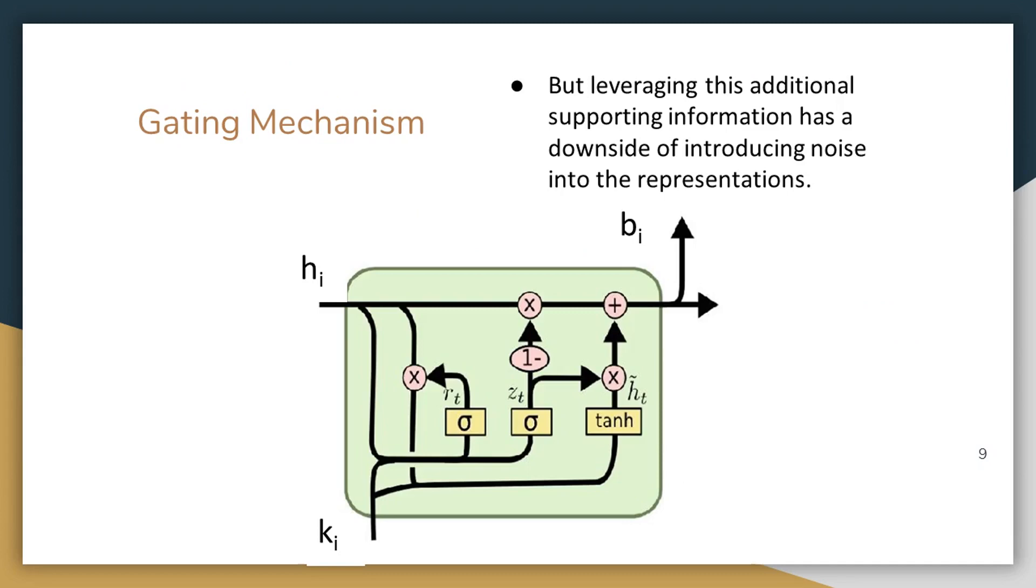This additional supporting information may also act as noise to a couple of words. So we need to have a balance between this additional supporting information and the local context. For that, we propose a gating mechanism.